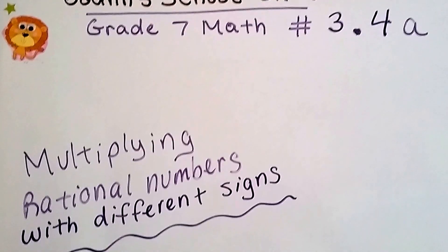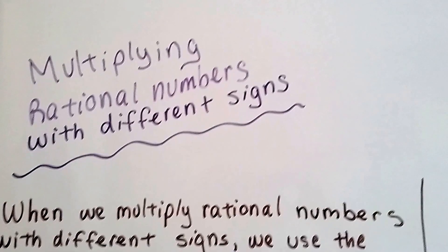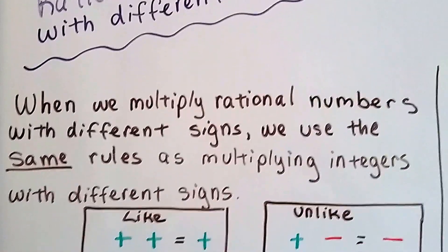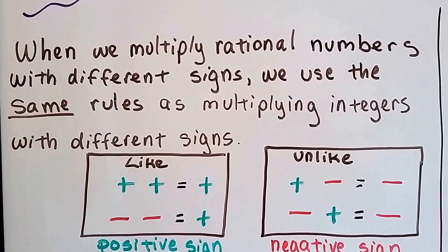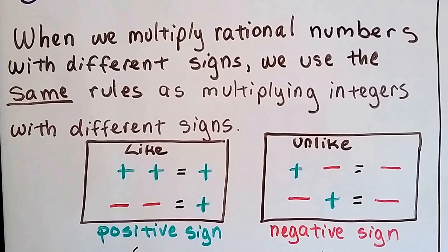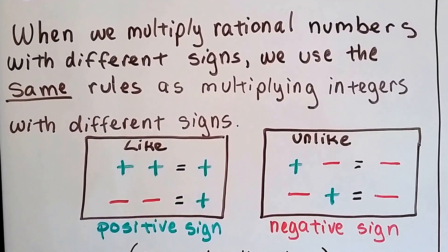Grade 7 math number 3.4a, multiplying rational numbers with different signs. When we multiply rational numbers with different signs, we use the same rules as multiplying integers with different signs. If they're like signs, the answer's going to be positive, and if they're unlike, the answer will be negative.